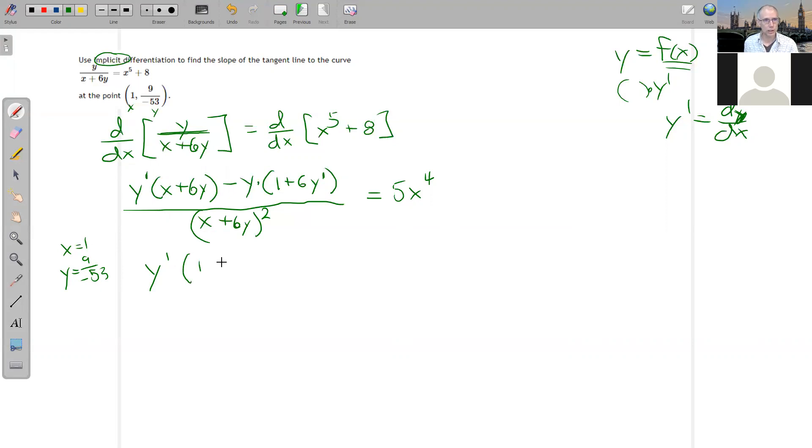X is 1 plus 6 times negative 9 over 53, which probably ain't going to clean up much, minus Y which is negative 9 over 53 times 1 plus 6Y prime, nothing to do there, all divided by 1 plus 6 times negative 9 over 53 squared. And that's equal to 5 times 1 to the fourth.